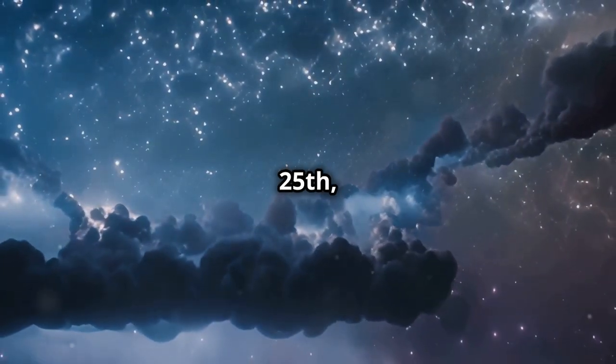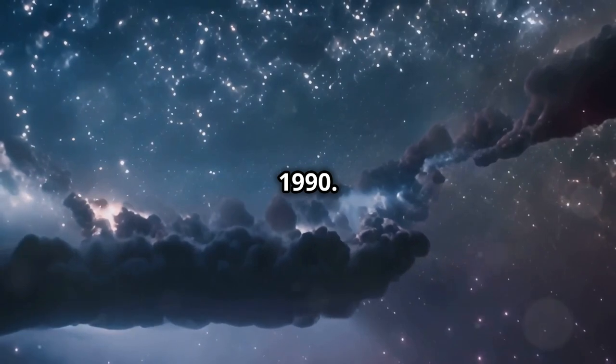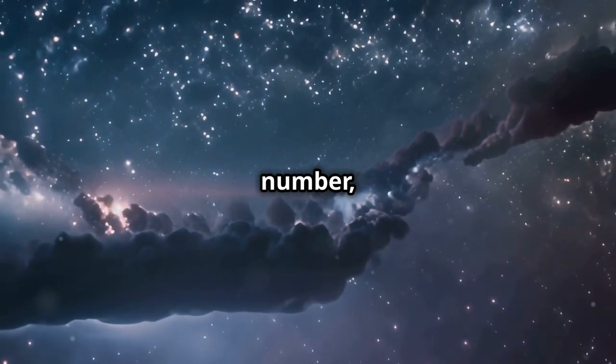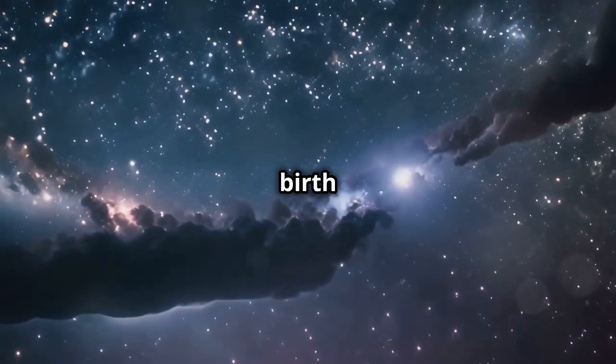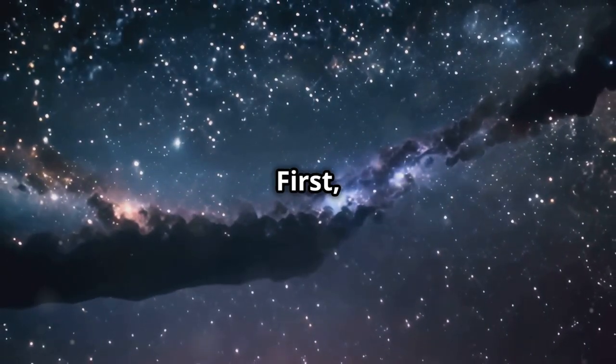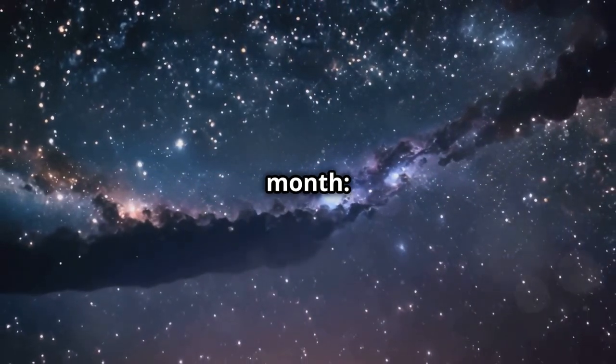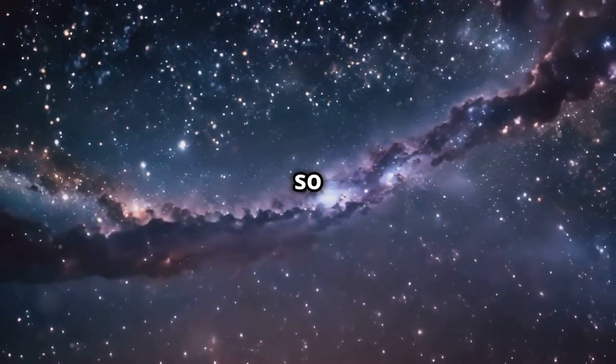Let's break it down step by step. Say you were born on April 25th, 1990. To find your karmic number, you would add the digits of your birth date like this. First, take the number for the month. April is the fourth month, so that's a 4.